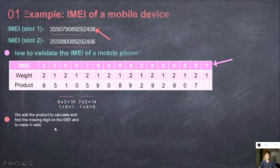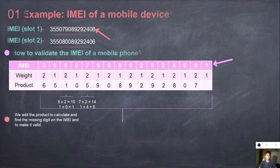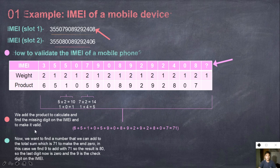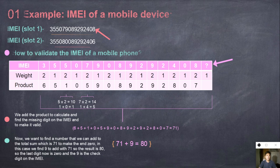So, we add the product to calculate and find the missing digit on the IMEI to make it valid. We add the products: 6 plus 5 plus 1 plus 0 plus 5 plus 9 plus 0 plus 8 plus 9 plus 2 plus 9 plus 2 plus 8 plus 0 plus 7 plus 2 equals 71. Now, we want to find a number that we can add to the total sum which is 71 to make the end 0. In this case, we find 9 to add with 71, so the result is 80. So, the last digit is now 0 and the 9 is the check digit on the IMEI. 71 plus 9 equals 80. In order to make the sum divisible by 10, we add 9.